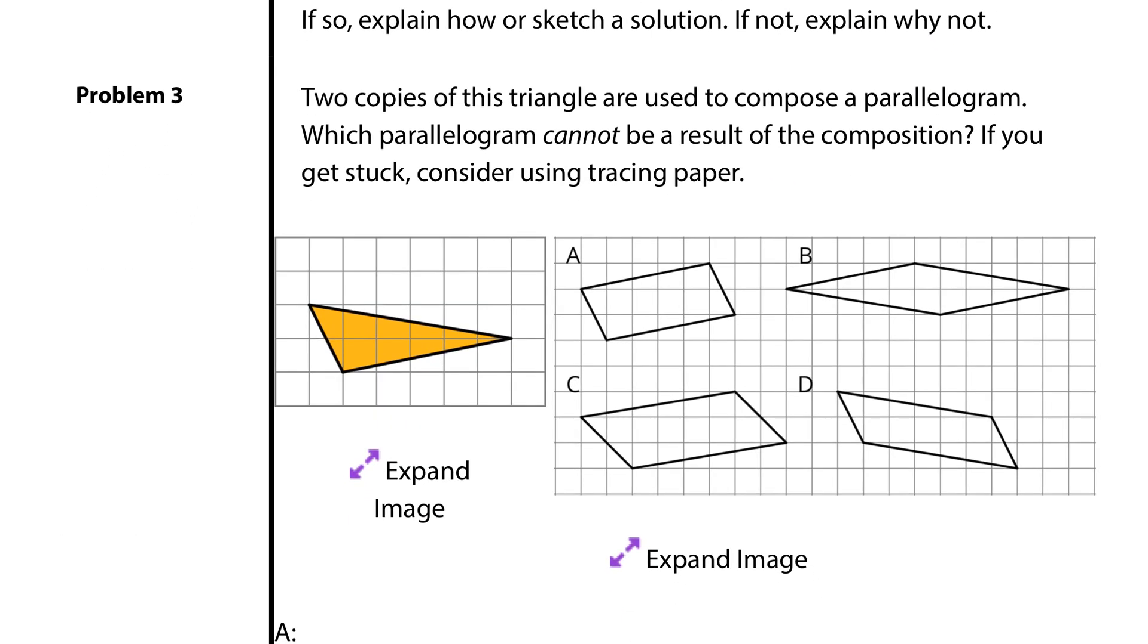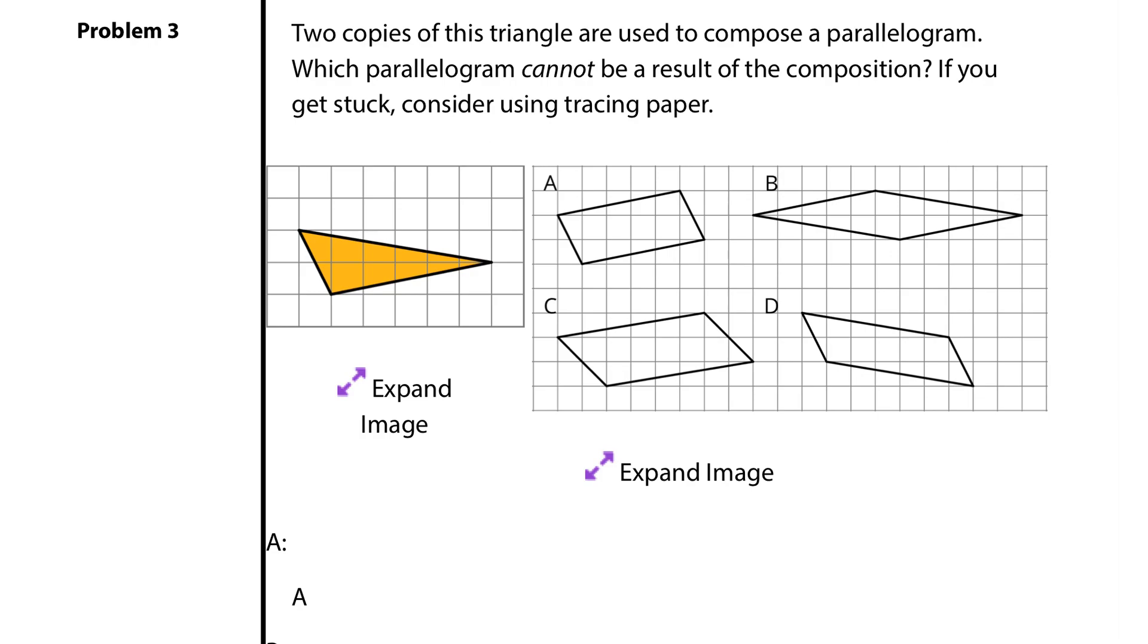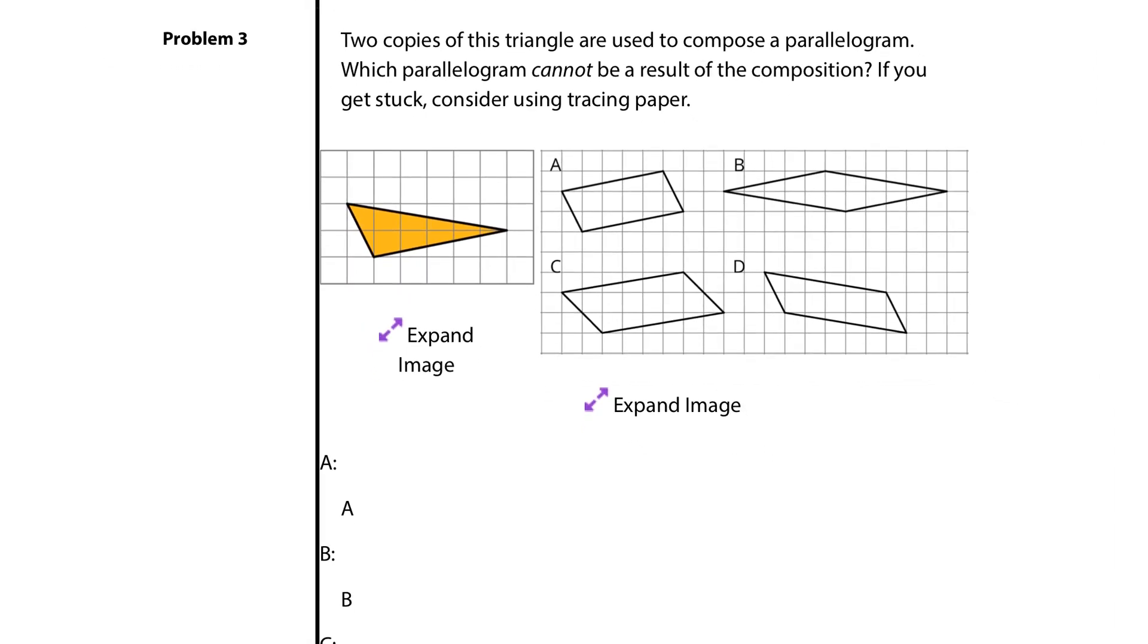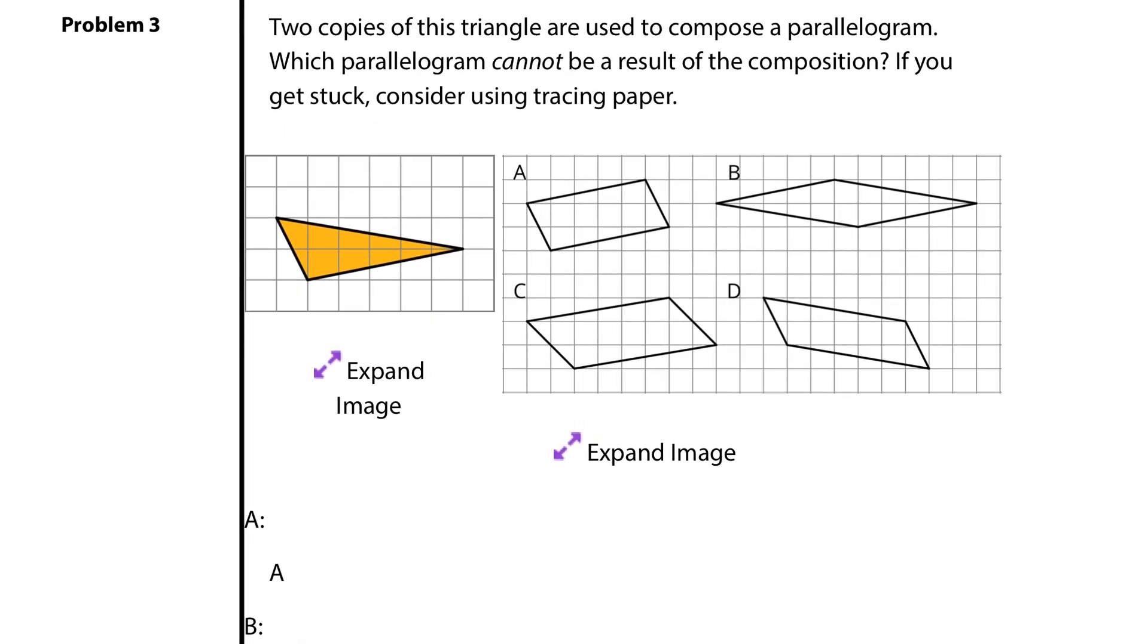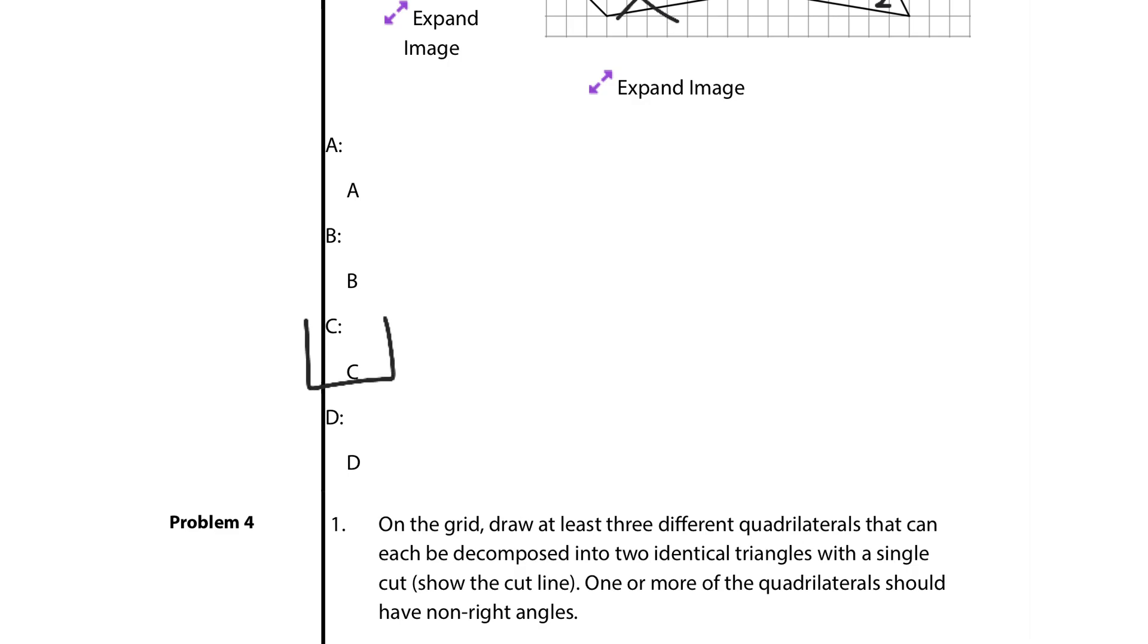Problem 3. Two copies of this triangle are used to compose a parallelogram. Which parallelogram cannot be a result of the composition? If you get stuck, consider using tracing paper. Our solution here, which one cannot be a result of this composition, is actually going to be letter C. You have this here which gives you triangle 1 and 2. You could have this here which gives you triangle 1 and 2. You could have this here which gives you triangle 1 and 2, but it will not work for C. So our solution here is C.